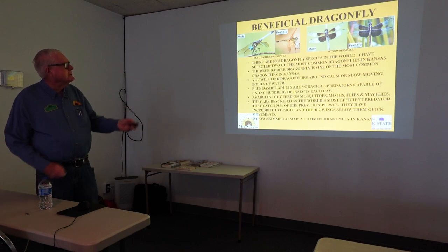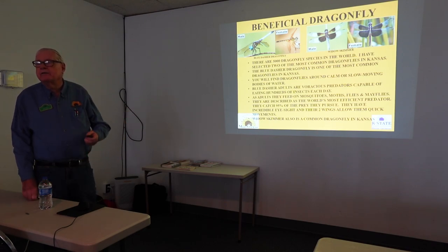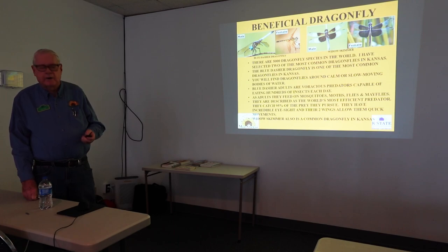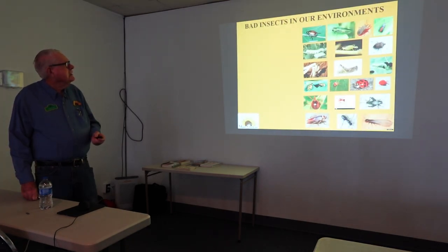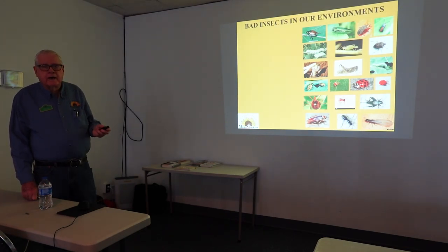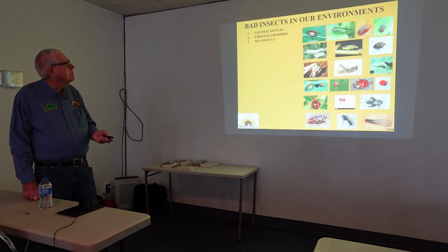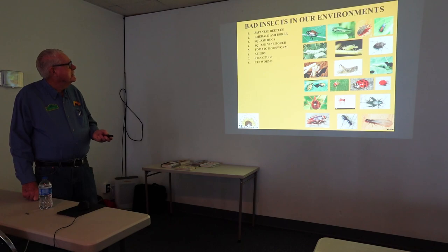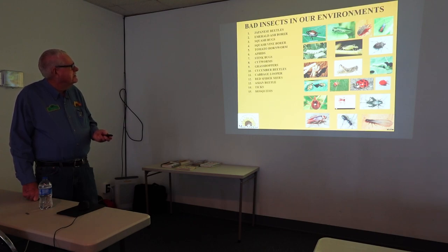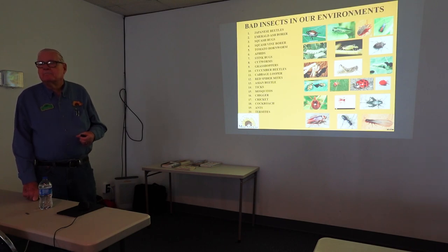The widow skimmer is another very common dragonfly you see around bodies of water. Now we're going to get to the bad guys: Japanese beetles, emerald ash borers, squash bugs, squash vine borers, tomato hornworm, aphids, stink bugs, cutworms, grasshoppers, cucumber beetles, cabbage loopers, red spider mites, Asian beetles, ticks, mosquitoes, chiggers, crickets, cockroach, ants, and termites. We've got quite a list.